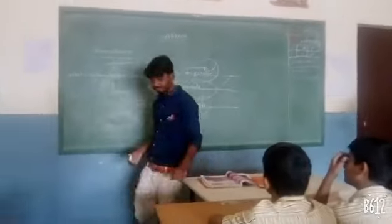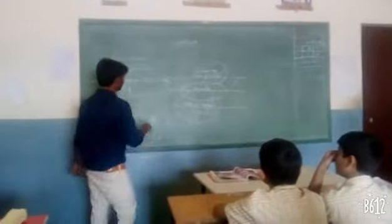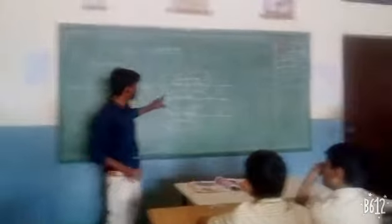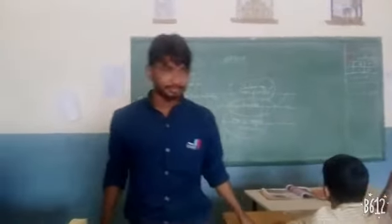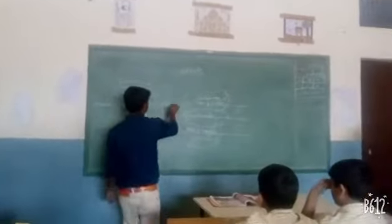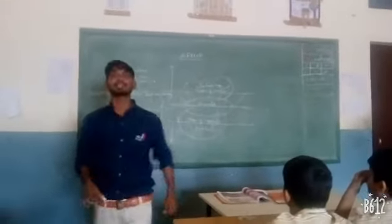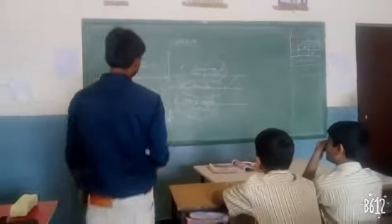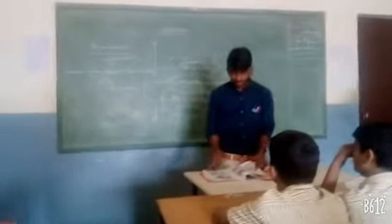Then we will see the climate of Africa. The climate has two different regions. The region from the Tropic of Cancer to the Tropic of Capricorn — this middle region is called the Tropic region. From this region upward and downward, that region is called the Temperate region.